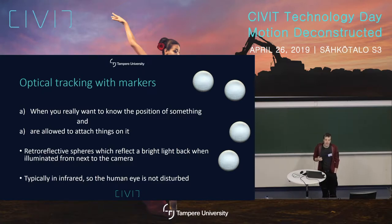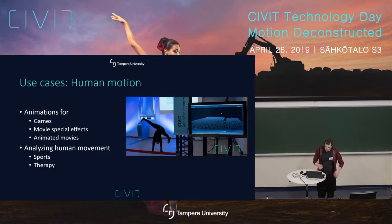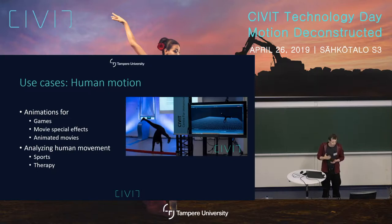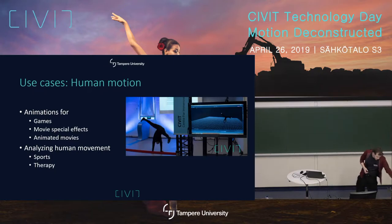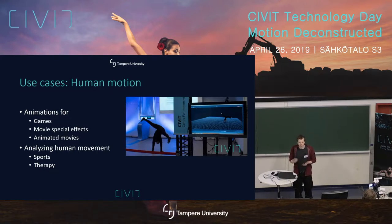Typically this is done in infrared so that the extra light going through the scene doesn't disturb the human observer or the human eye. Why would you want to do this? The starting use case is motion capture — that's what the system is built for. You can create animations for games, special effects for movies, animated movies, and all kinds of things where you would need synthetic motion.